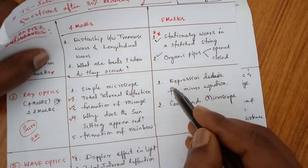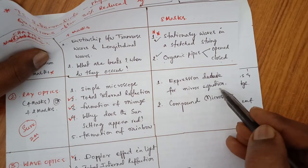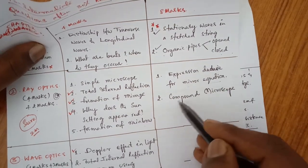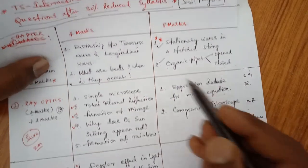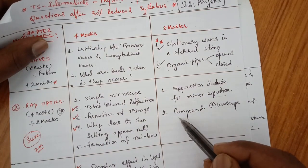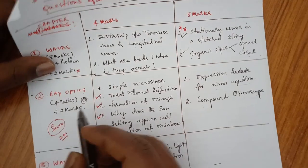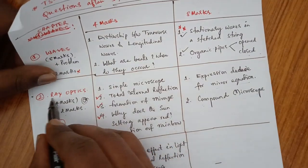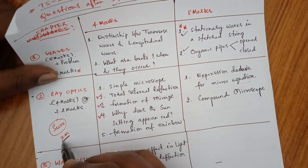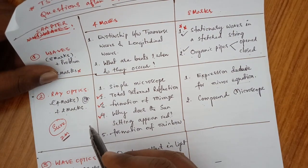For 8 marks from Ray Optics: derive the expression for the mirror equation, and compound microscope. From Ray Optics, 100% we will get only 4 marks and 2 marks questions. For 2 marks: myopia, hypermetropia, and the power of a convex lens.